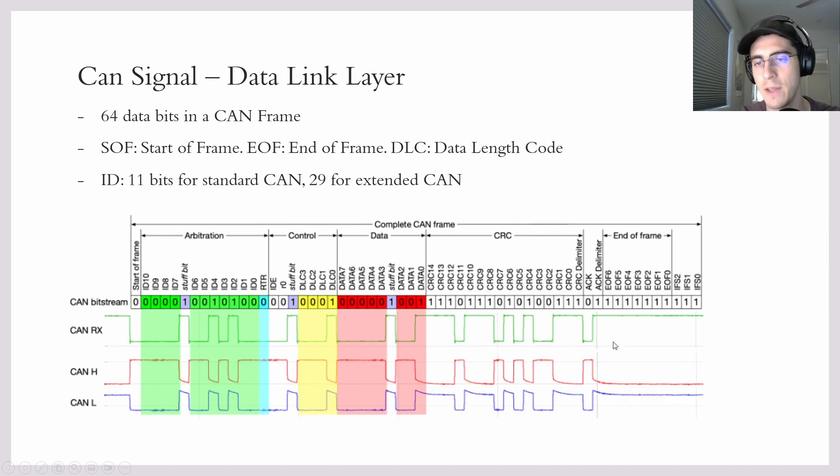We then have the ACK bits. So the ACK bits will be acknowledged from the receiver. So the transmitter will see the ACK bits and will say, okay, cool, the receiver got my message. And then we have the end-of-frame bits. So these are a recessive voltage. So the bus will just go back to idle for a certain amount of bits.